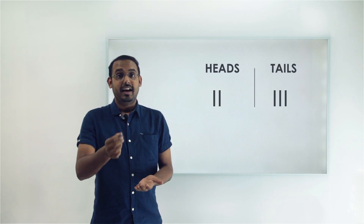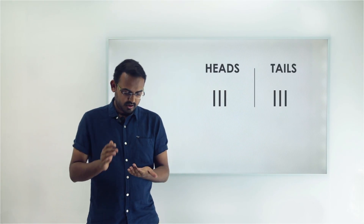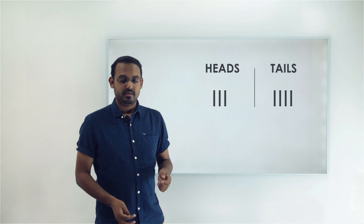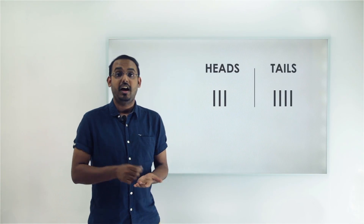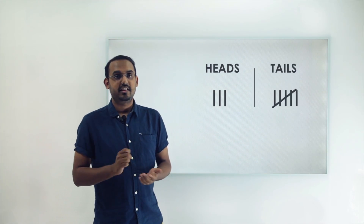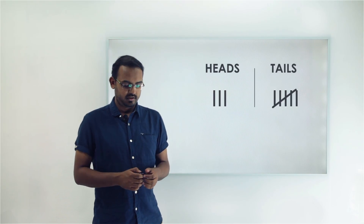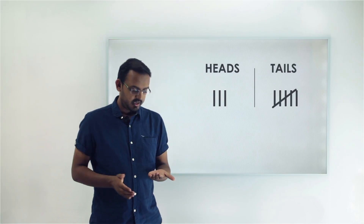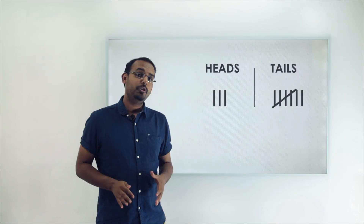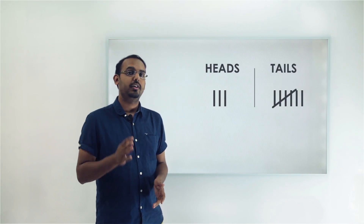Continuing the experiment — sixth toss: heads, so 3 tails and 3 heads. Seventh: tails — 4 tails, 3 heads. Eighth: tails — 5 tails, 3 heads. Ninth: tails — 6 tails, 3 heads. Tenth: tails — so after completing 10 tosses, 7 times I got tails and 3 times I got heads.